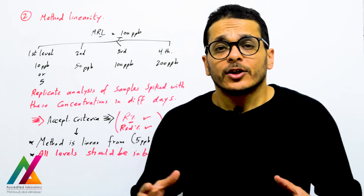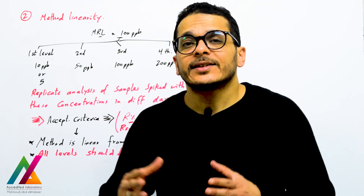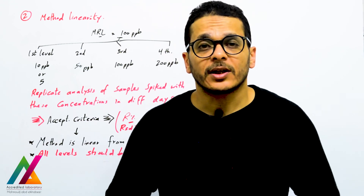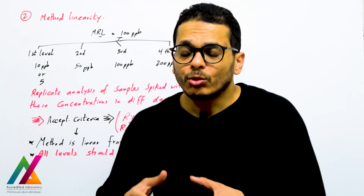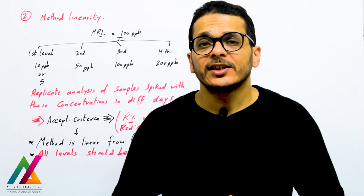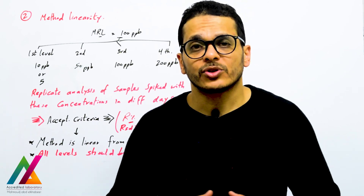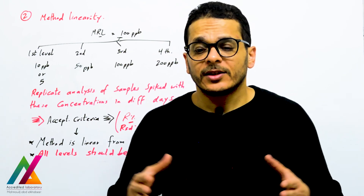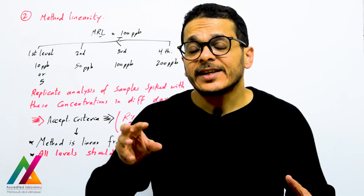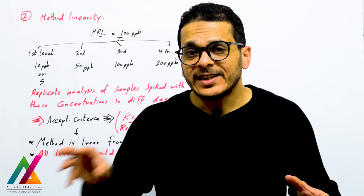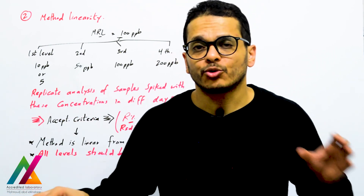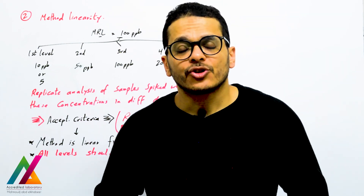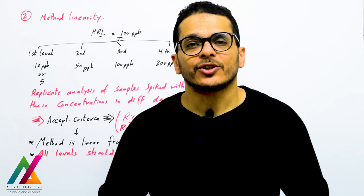In summary, instrument linearity and method linearity are very important performance parameters to evaluate your method. Instrument linearity creates the calibration curve used to quantify target analytes in unknown samples. Method linearity confirms your method can accurately quantify concentrations across the range of interest, from the lowest to the highest level. That was the end of today's lecture — see you in the next one.